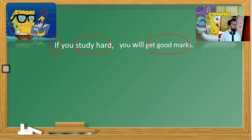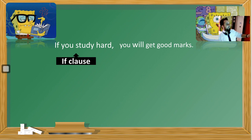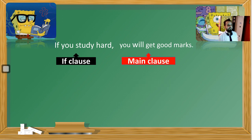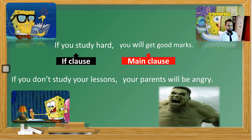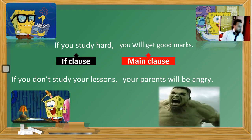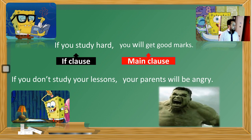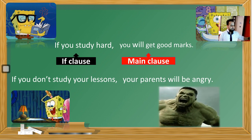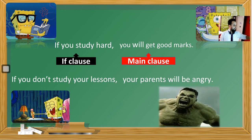We can also make negative sentences by using if. For example: 'If you don't study your lesson, your parents will be angry.' Our condition is studying — if you don't study, your parents will be angry. Olumsuz cümle de yapabiliyoruz. İki tarafta da olumsuz cümle kurabiliriz; istersek iki kısmı da olumsuz yapabiliriz.